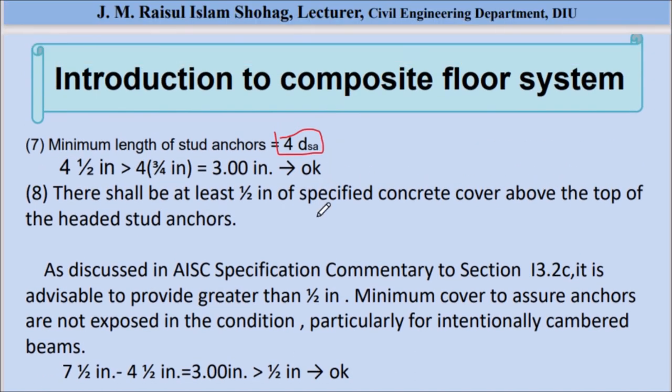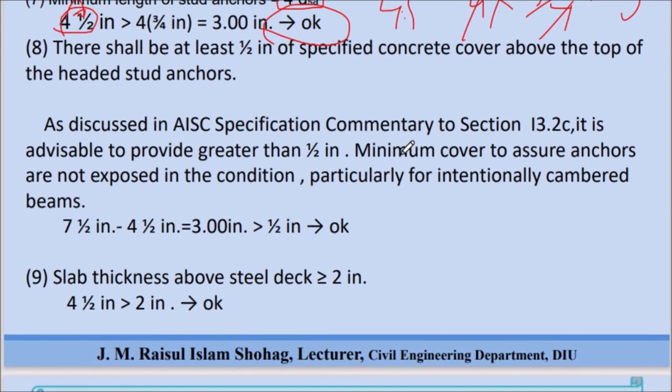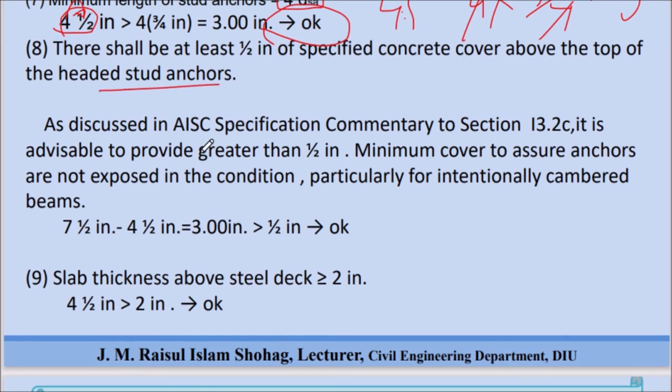Steel headed stud anchors after installation shall extend not less than 1/2 inch above the top of the steel deck. A minimum anchor length of 4 1/2 inches is required to meet this requirement with the 3 inch deck. From steel headed stud anchor manufacturer data, a standard stock length of 4 inches is selected. Using length reduction to account for burn-off during anchor installation through the deck yields a final installed length of 4 1/2 inches. The minimum embedment is 4dsa, which equals 4 times 3/4 inch equals 3 inches, which is less than 4 1/2 inches, so this is okay.